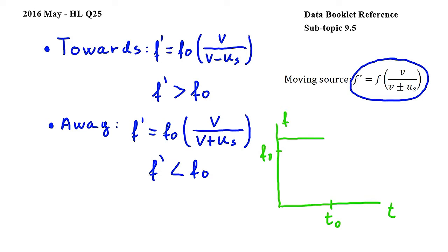As the train passes the observer, the frequency suddenly drops and as the train is moving away from the observer after t zero, the observed frequency is lower than f zero and is constant. Therefore the answer to this question is d.